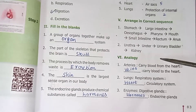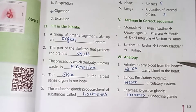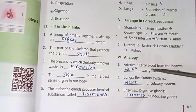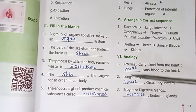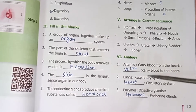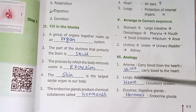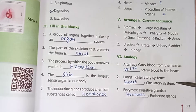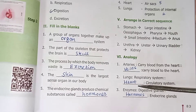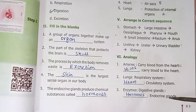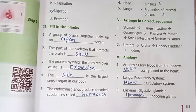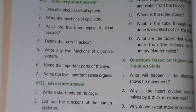Analogy: Arteries carry blood from the heart; veins carry blood to the heart. Lungs — respiratory system; heart — circulatory system. Enzymes — digestive gland; hormones — endocrine glands.